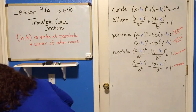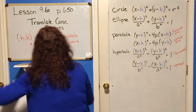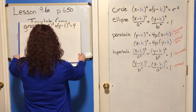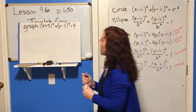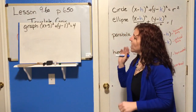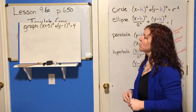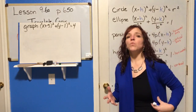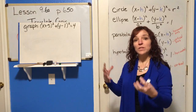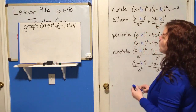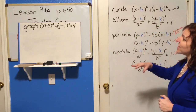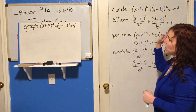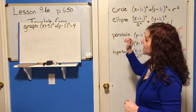Let's graph X minus 5 quantity squared plus Y minus 1 quantity squared equals 4. Step 1 is to figure out what shape this is going to be. We've got two squared terms, so it's not a parabola — you can rule that out.